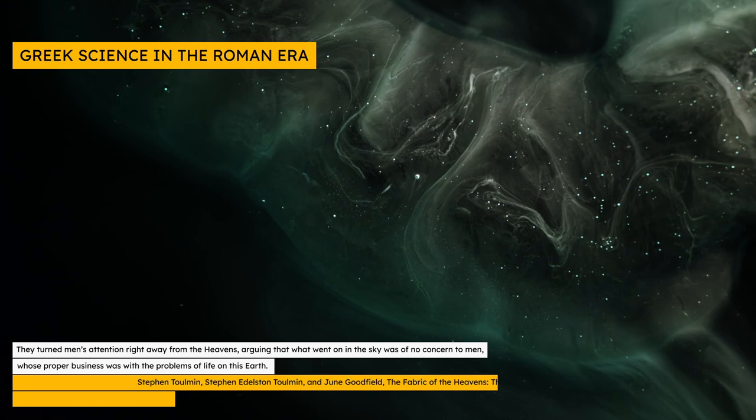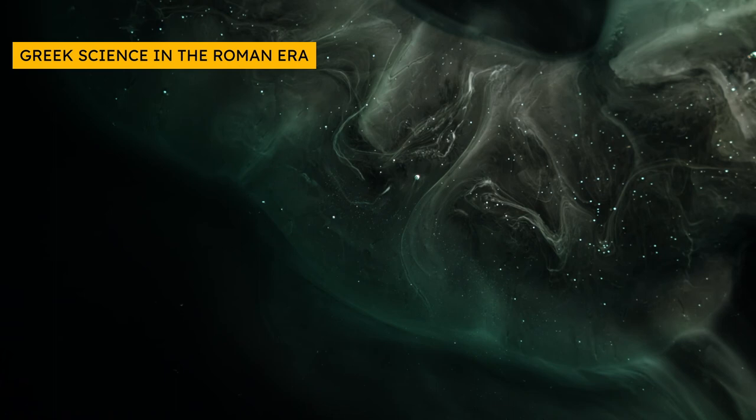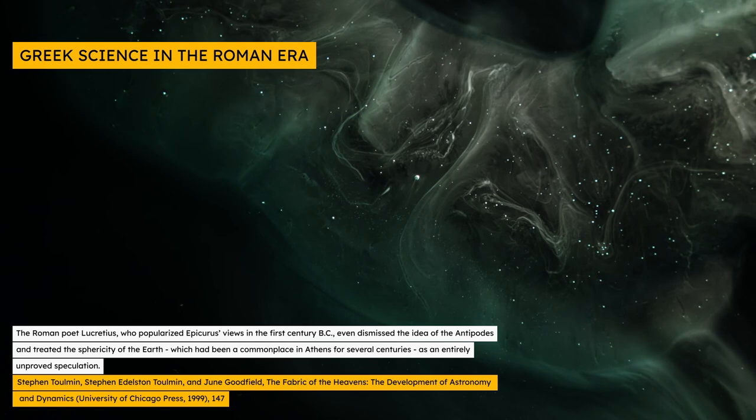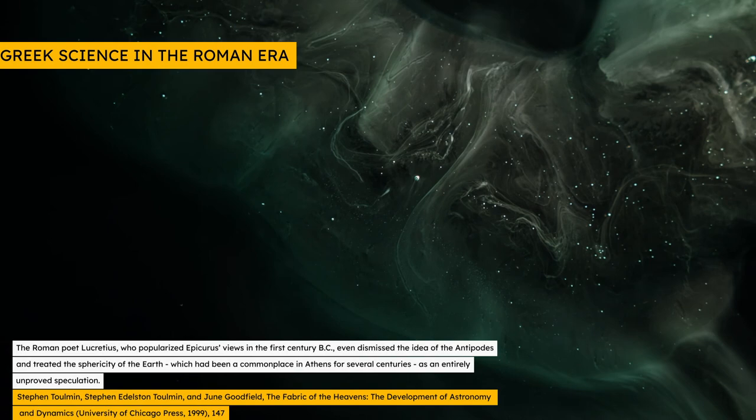They go on to write that Epicurean philosophers turned men's attention right away from the heavens, arguing that what went on in the sky was of no concern to men. As an example, they cite the Roman Epicurean poet Lucretius, who not only denied that people could live on the other side of the earth, but also denied the earth was a sphere, a concept which Toulmin and Goodfield observe had been a commonplace in Athens for several centuries.